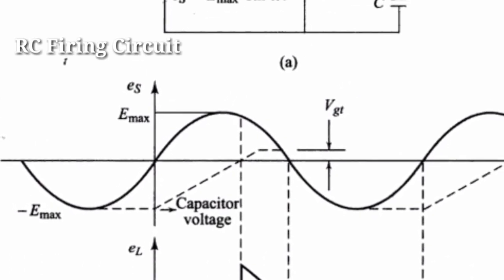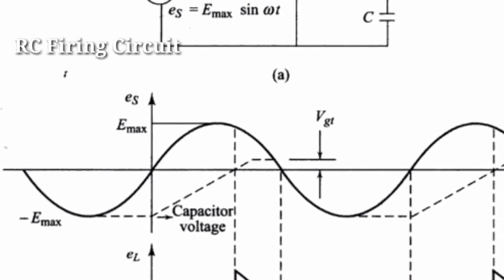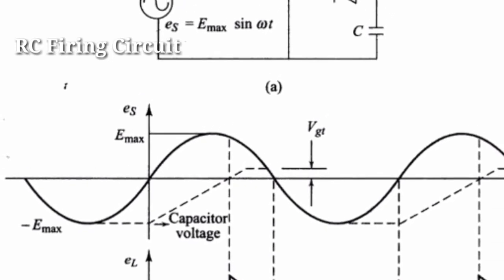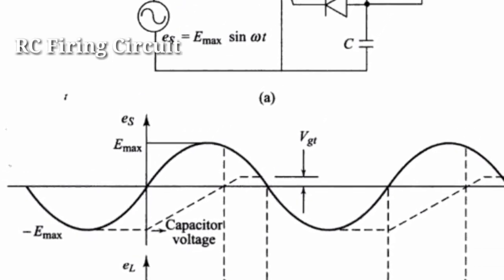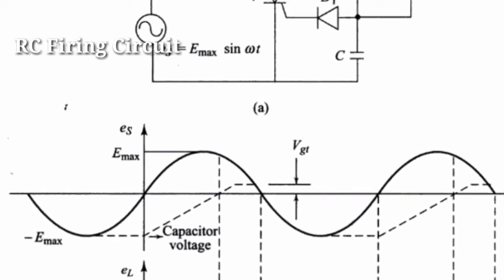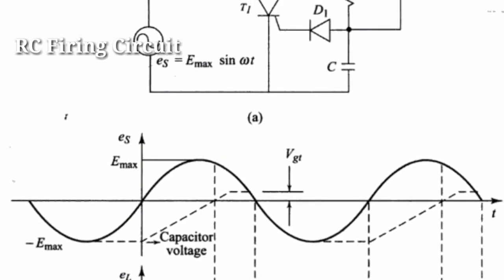That is the major difference between R and RC firing circuit. R firing circuit used for below 90 degrees only, whereas RC firing circuit used for 0 to 180 degrees firing. In the negative half cycle, the capacitor C charges through diode D2 with the lower plate positive.